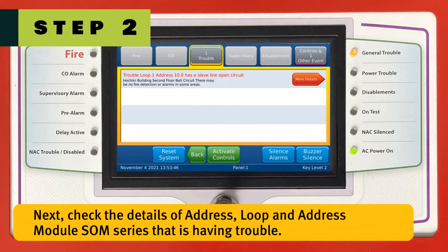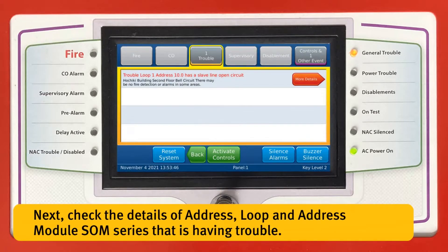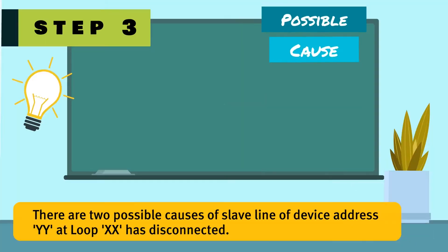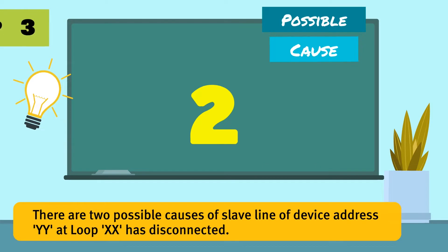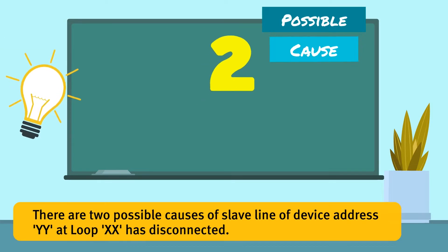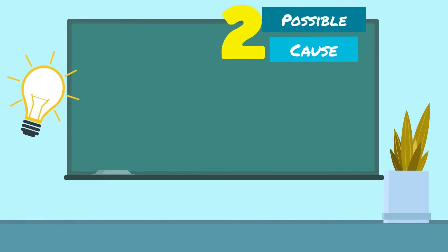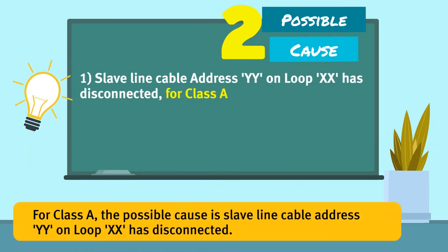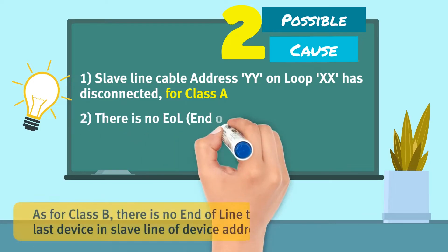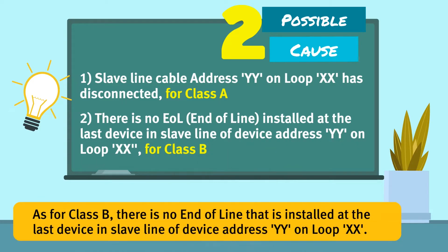Next, check the details of address, loop, and the address module SOM series that is having trouble. There are two possible causes of slave line of device address YY at loop XX being disconnected. For Class A, the possible cause is the slave line cable at address YY on loop XX has disconnected. For Class B, there is no end of line installed at the last device in the slave line of device address YY on loop XX.